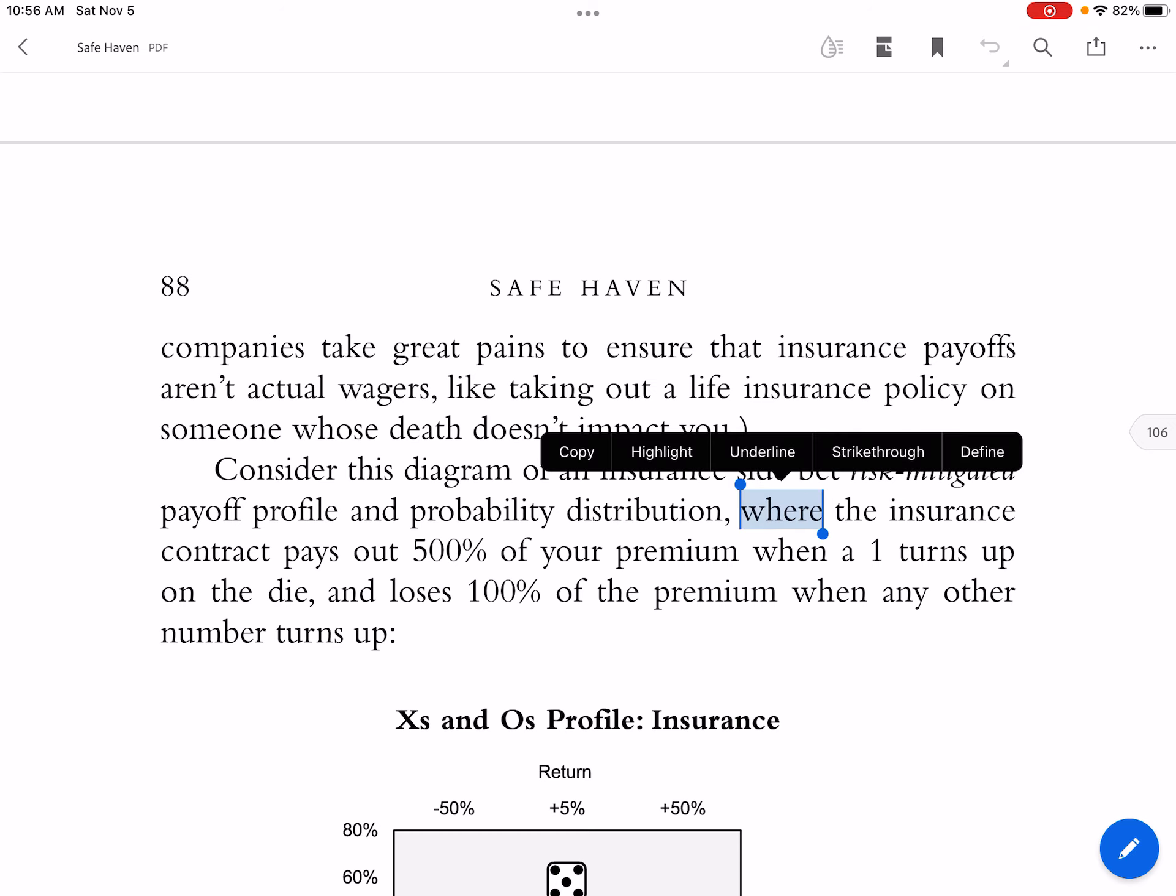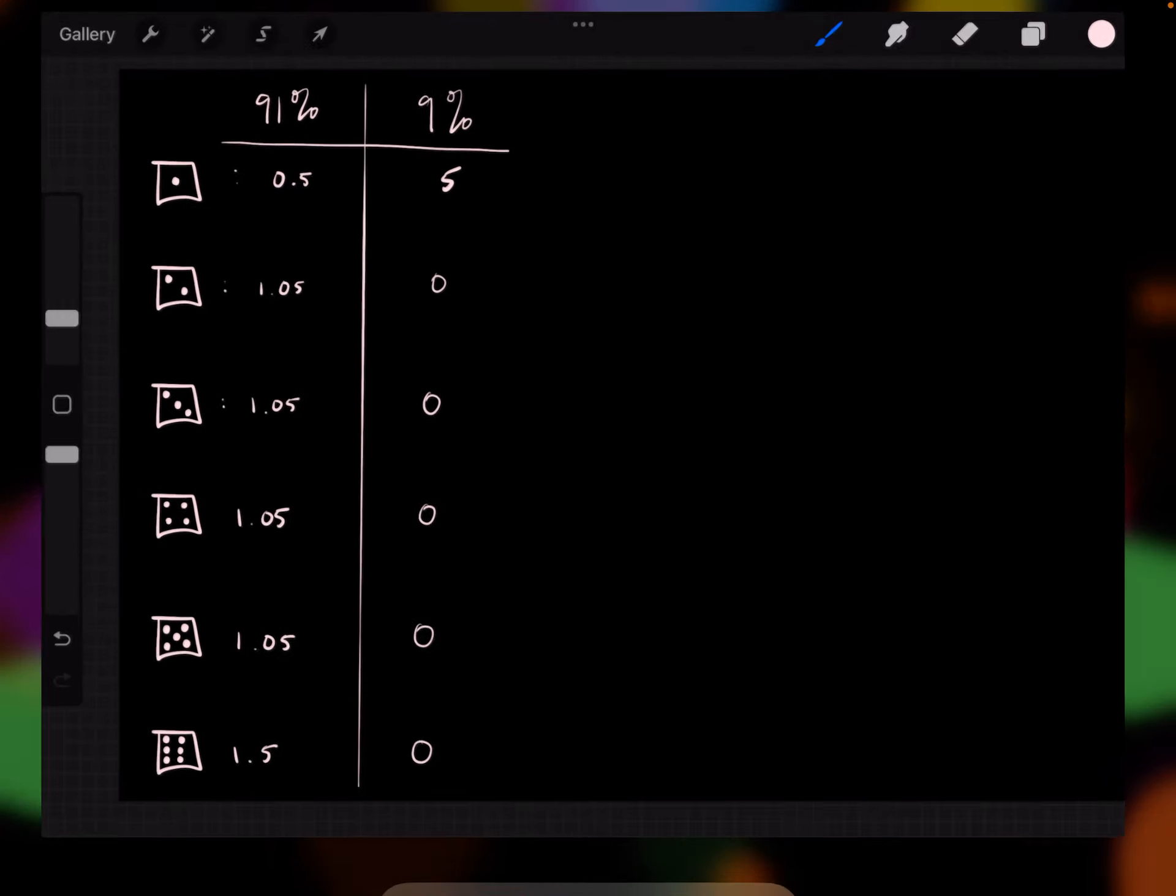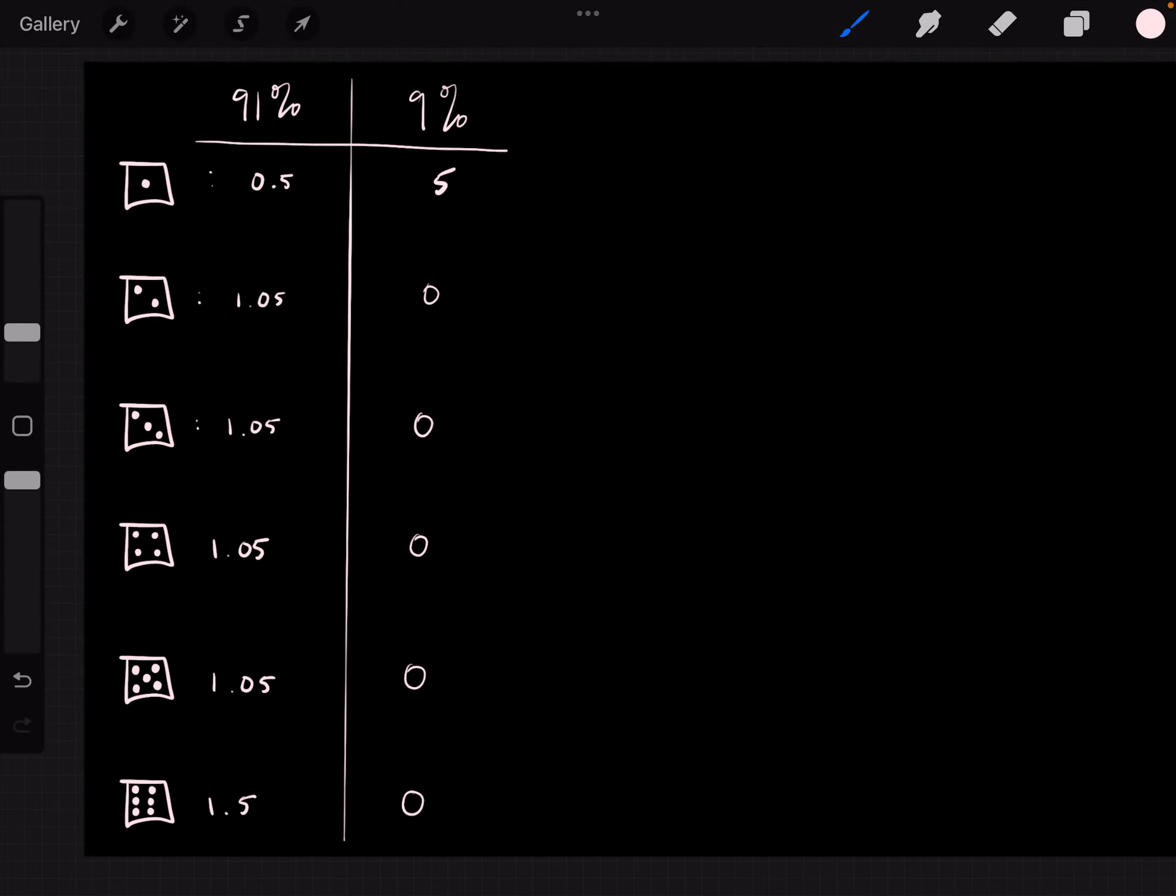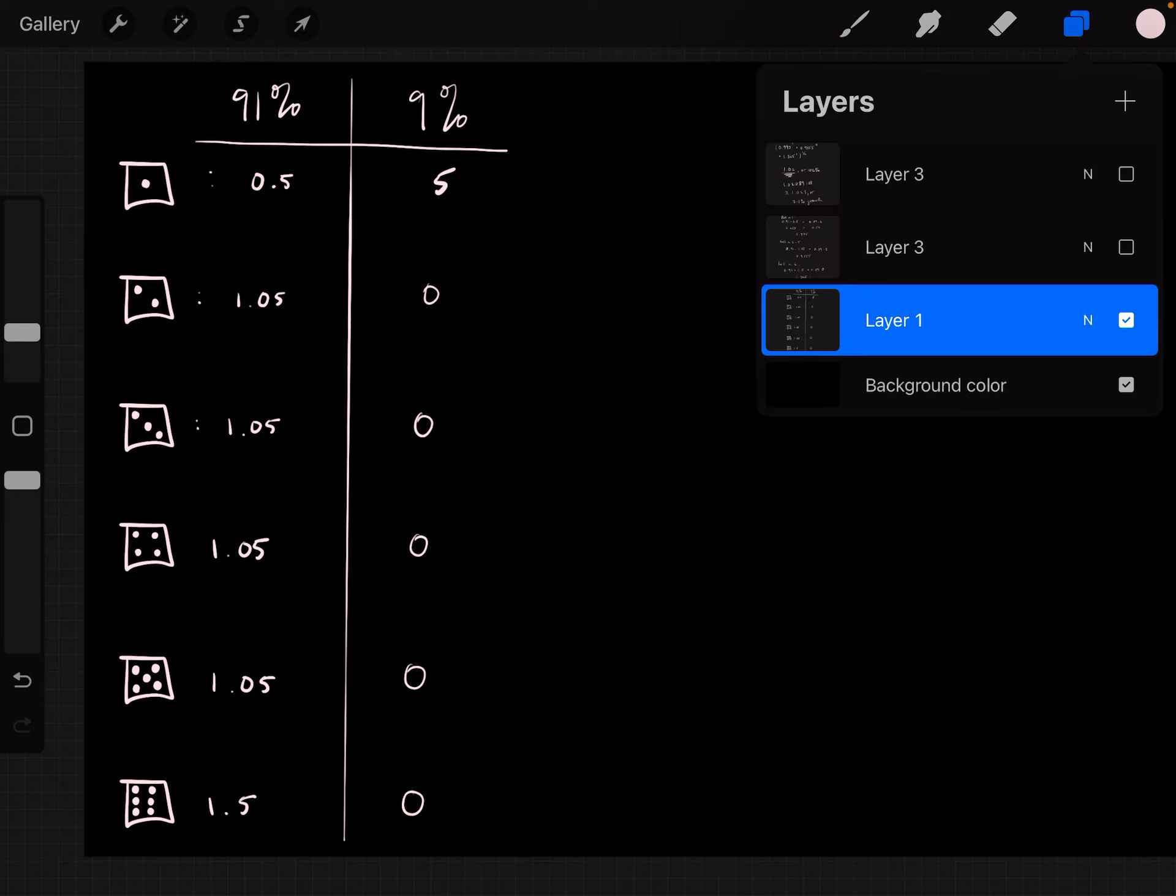So I thought that when a contract pays out 500%, what that means is you simply multiply it by 5. And so when I was going through the math, that's what I did with the insurance side bet. Let me show you this.